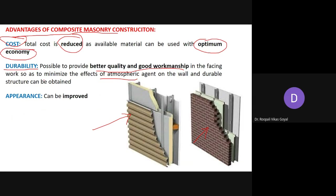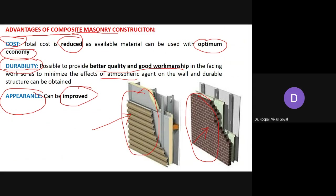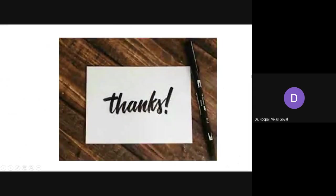If durable material with better quality and good workmanship is applied on the front side, a durable structure can be constructed. Regarding appearance, using good quality material with good workmanship on the front side, along with ornamental finishes, improves the appearance significantly. Overall, by providing composite masonry you can minimize cost, improve appearance, and achieve a durable structure. With this, I conclude my presentation on composite masonry. Thank you very much.